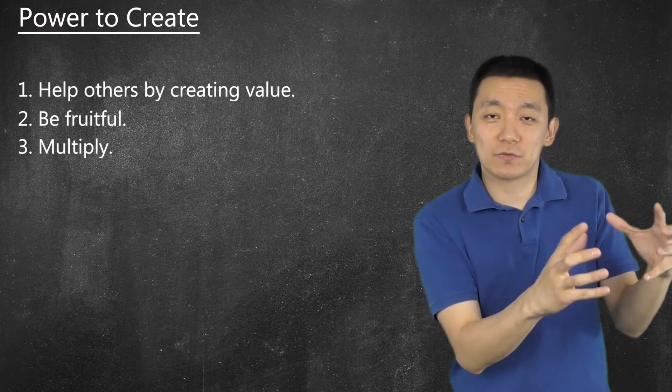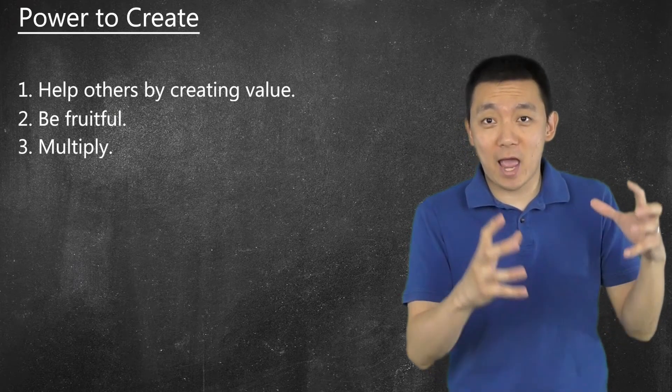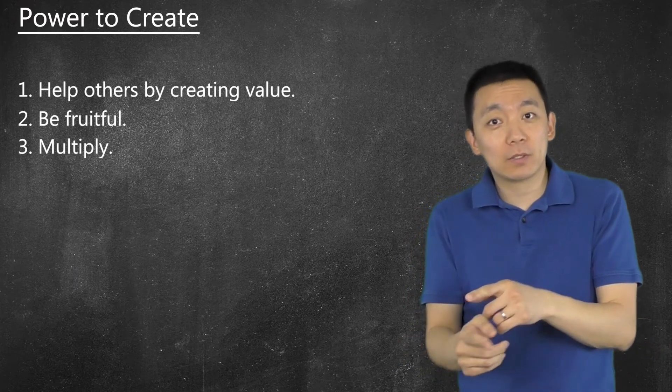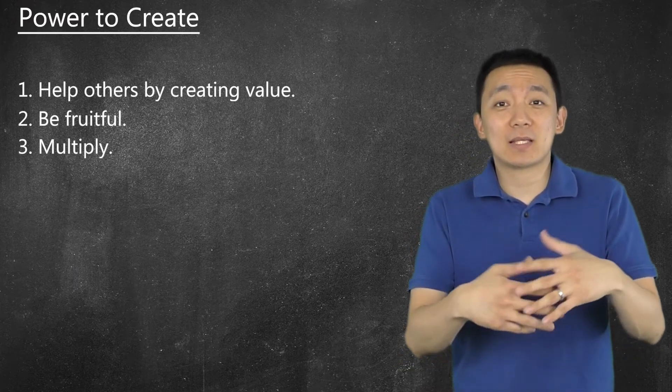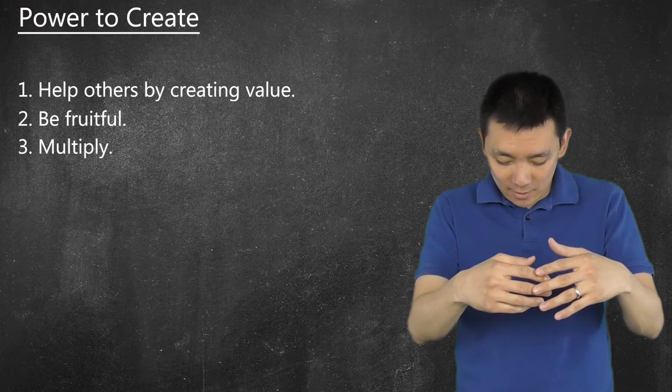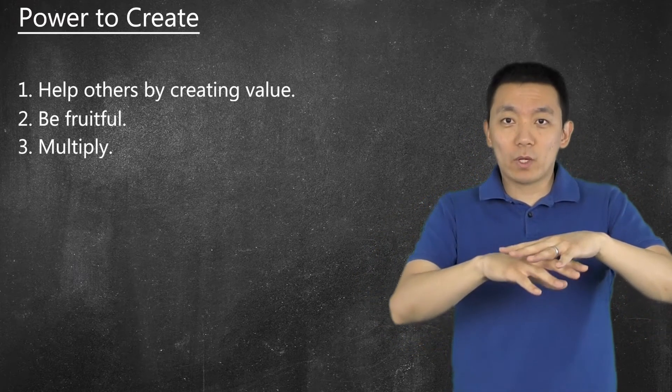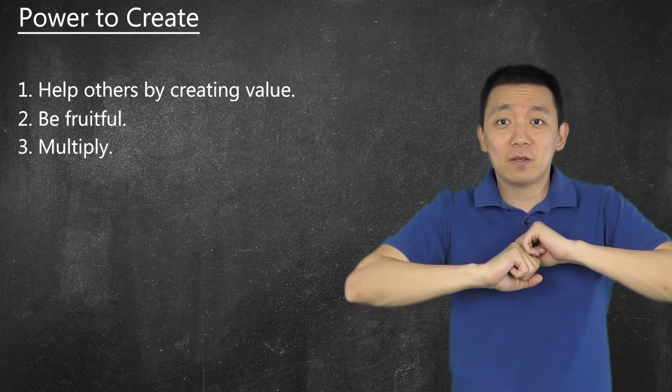So we want to produce fruit first, something that's fruitful, actually good, actually really, really good, really, really helpful. And then we work on multiplying, getting things out there, producing systems, you know what I'm saying? So we want to be fruitful and then we multiply.